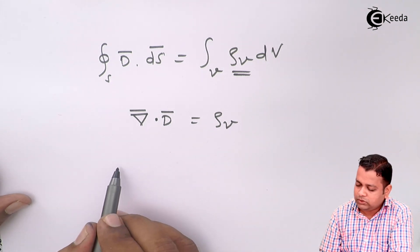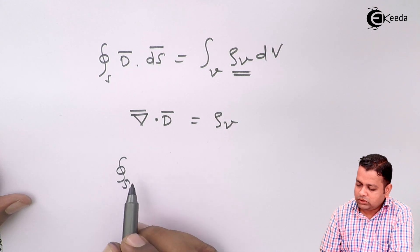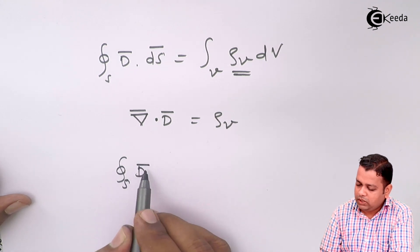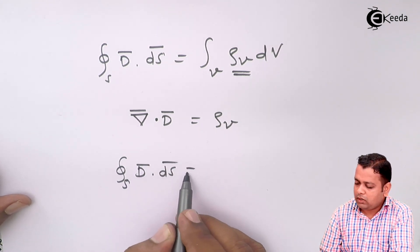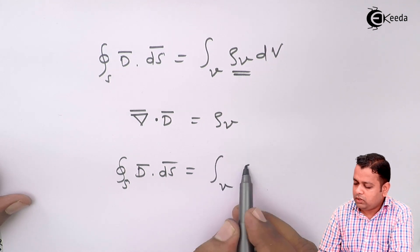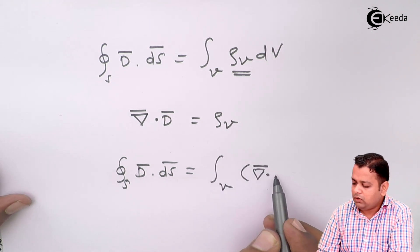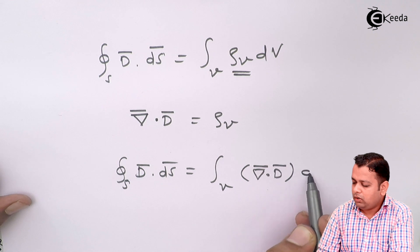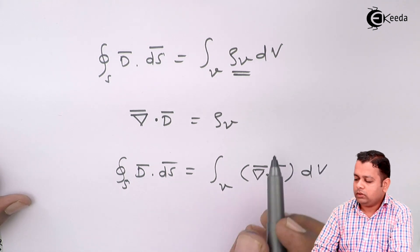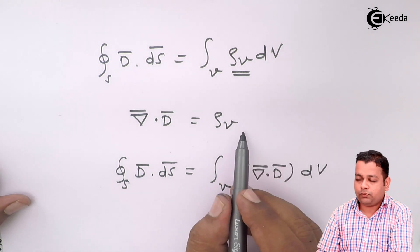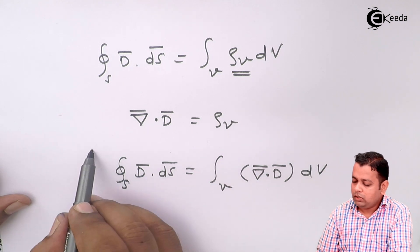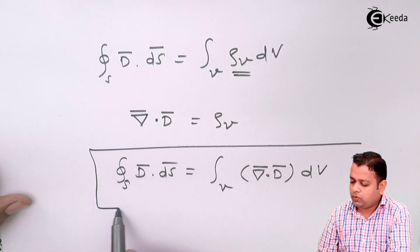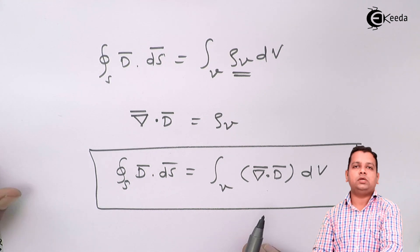So the equation becomes closed surface integral of d bar dot ds bar equals volume integral of divergence of d bar dv. This was the integral form, this was the point form of Gauss's law. Using the substitution for rho v, we have come to this form of equation.